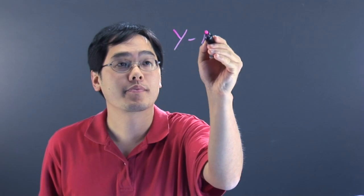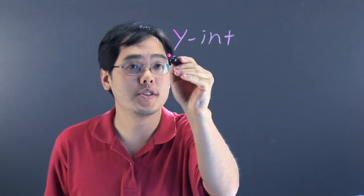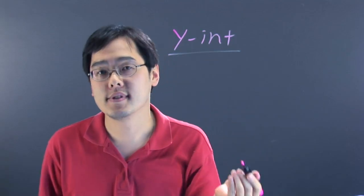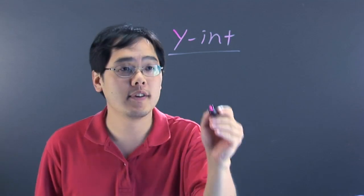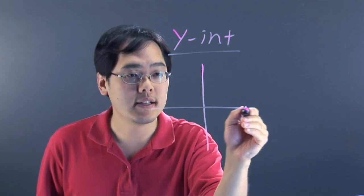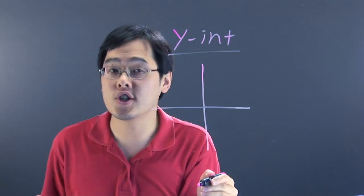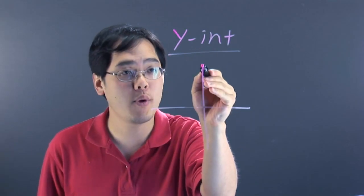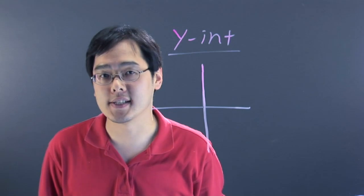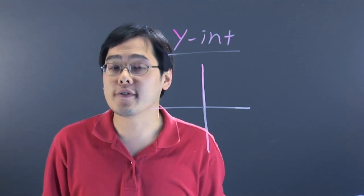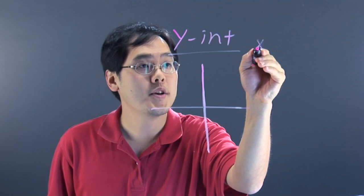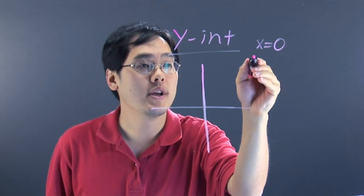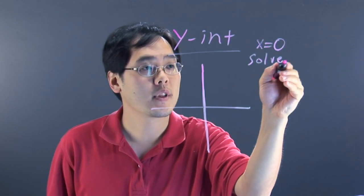Now the y-intercept is denoted y-int for short. But it's a point on the graph that intercepts or touches the y-axis. So it's basically a point that's going to be along this particular axis here. Now the easiest way to find the y-intercept is letting x be zero and then solving for y.